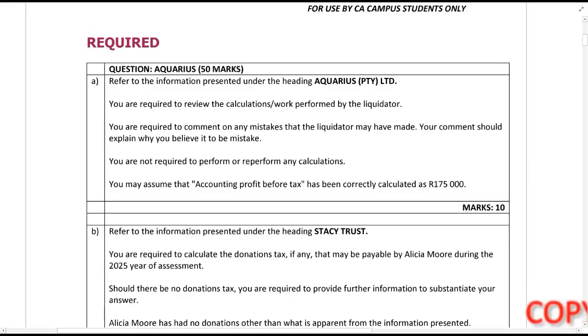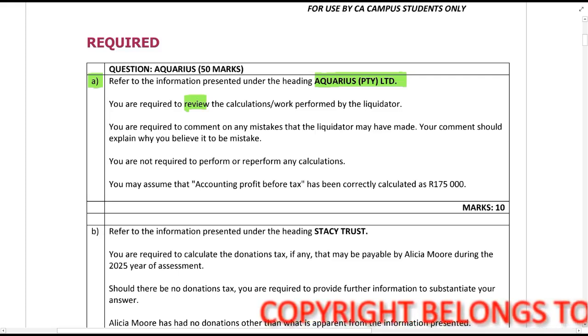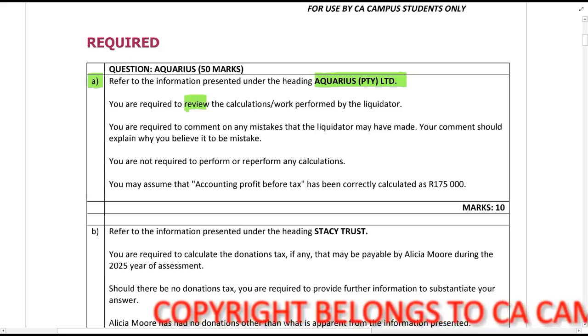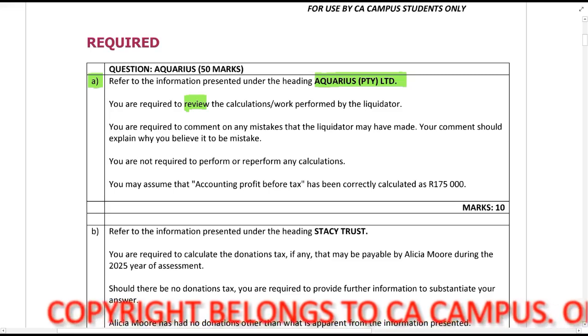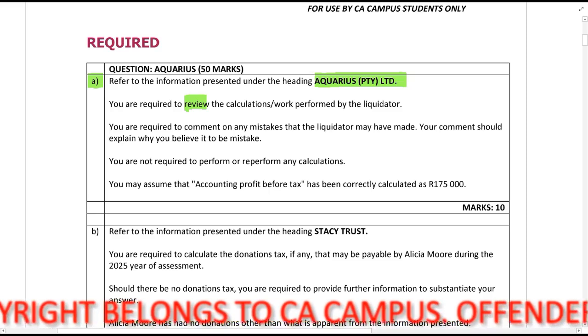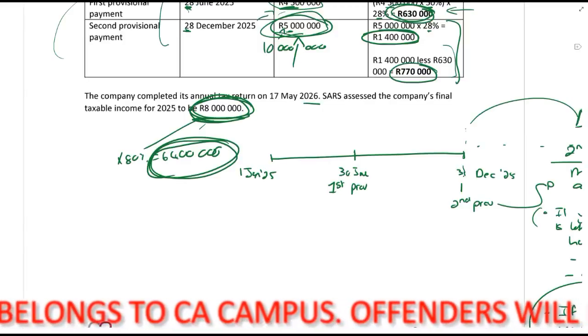Okay, our first required, A, is refer to the information under the heading Aquarius PTY Limited. You are required to review the calculations and work performed by the liquidator. You are required to comment on any mistakes that the liquidator may have made.